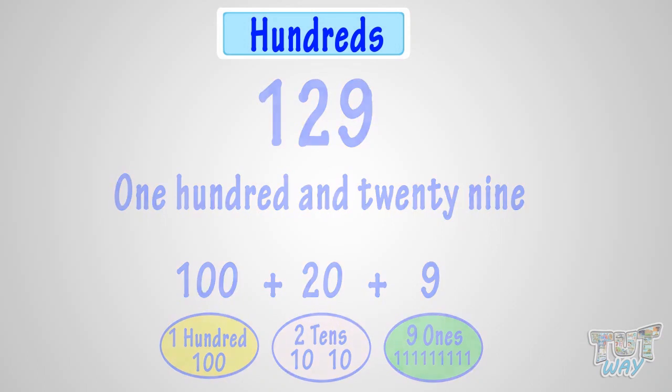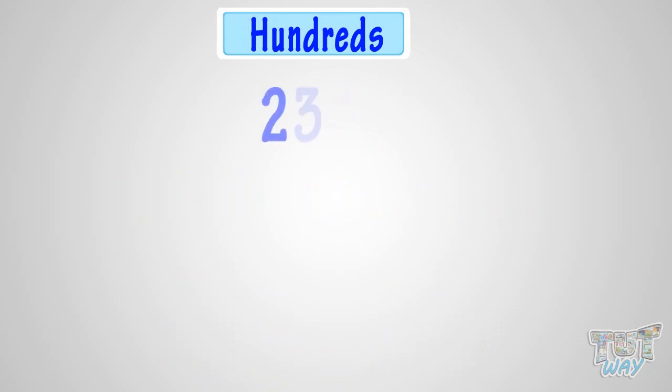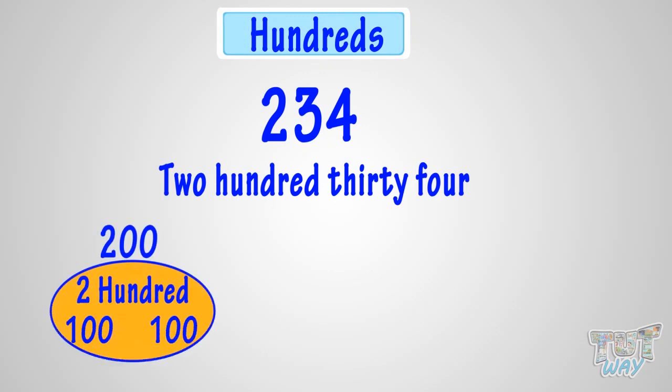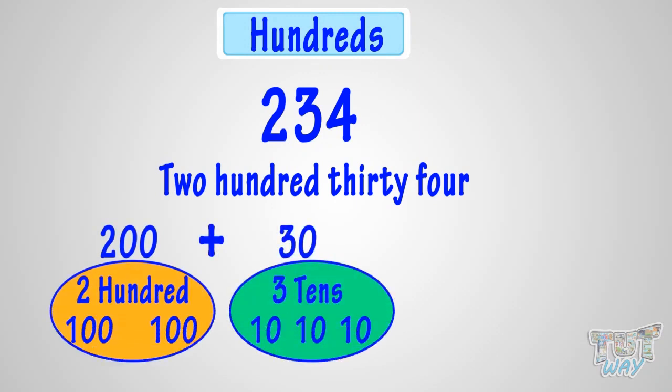Let's take another example. Which number is this? This is two hundred and thirty-four. Here we have two hundreds, thirty or three tens, four or four ones in this number.